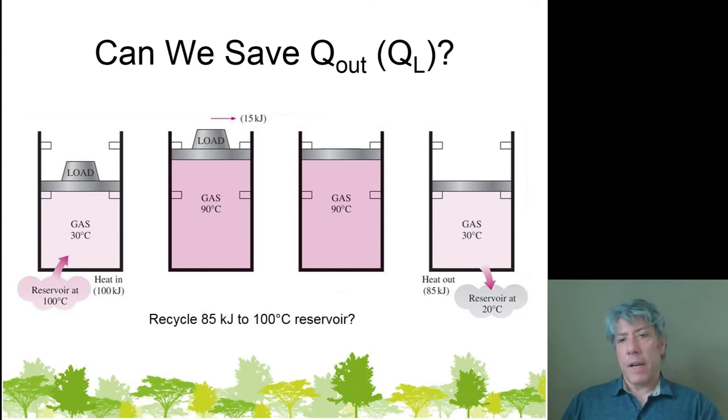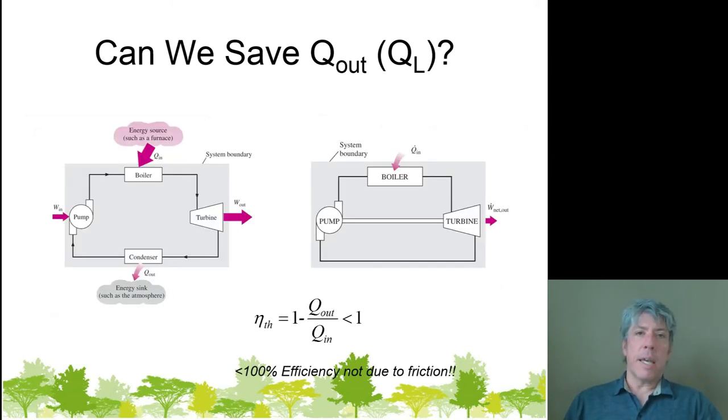Could we recycle that 85 kilojoules into the 100 degree Celsius reservoir? There's no way to do that because 100 degree Celsius is a higher temperature than all the temperatures we see here. Even the closest one is 90 degrees and that's still less than 100 degrees. If we put that thermal energy reservoir in contact with the gas, heat's just going to flow from the thermal energy reservoir into the gas and that's the wrong way. So, there's no way to get past this. The point of this is that our engines do not have 100% efficiency and the reason they don't have 100% efficiency has nothing to do with friction.